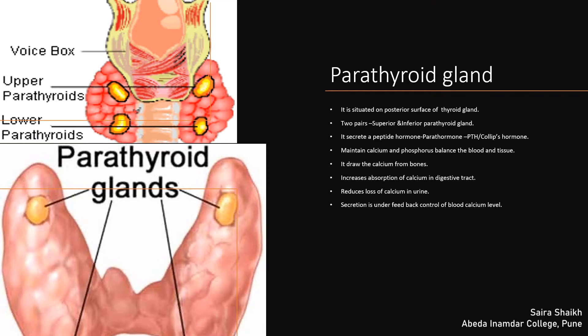The next endocrine gland is the parathyroid gland. It is situated on the posterior surface of the thyroid gland and has two pairs. The first uppermost pair is called the superior parathyroid gland and the lower pair is the inferior parathyroid gland. This gland secretes a peptide hormone called parathormone, or PTH. Parathormone plays a very important role in maintaining the calcium and phosphorus balance in blood as well as tissue.